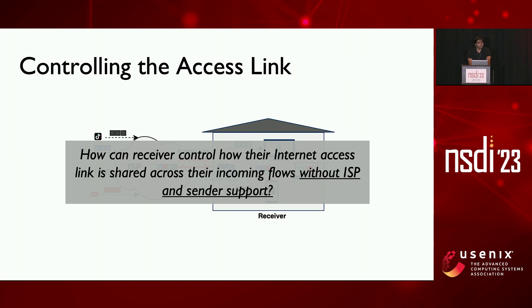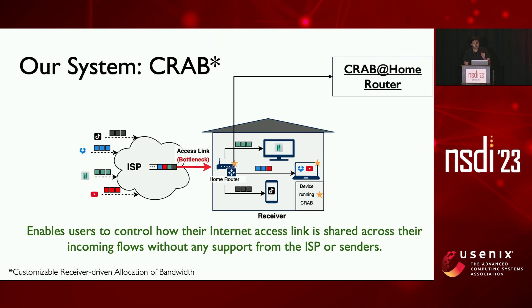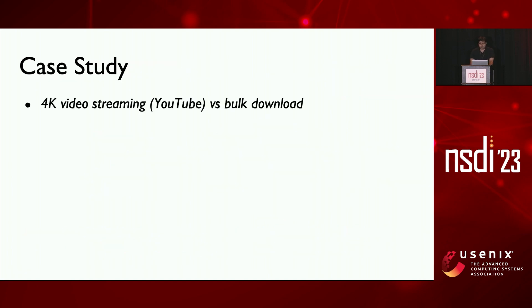So both of these alternatives are outside the receiver's control and need explicit support from ISP or the senders, who may not have enough incentive to provide such a service. To revise our question: how can we enable receivers to control how their internet access link is divided across their incoming flows without any ISP or sender support? I will be presenting Crab, which is our solution to this problem. Crab works solely from the receiver's domain. When operating at the home router, it does weighted sharing of the downlink across devices, and when operating on the end device, it shares the user's share of downlink bandwidth across their applications or flows.